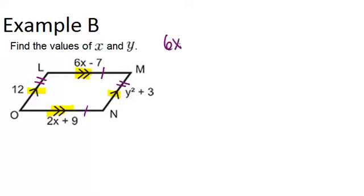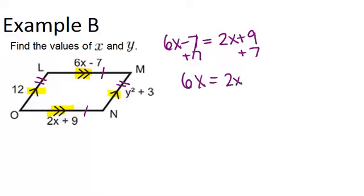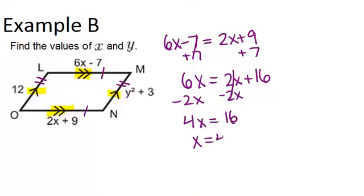6X minus 7 must equal 2X plus 9, because those two sides are opposite sides of a parallelogram. I can solve this equation in order to solve for X. 6X equals 2X plus 16, subtracting 2X gives me 4X equals 16, and therefore X equals 4.